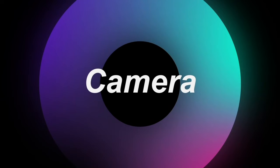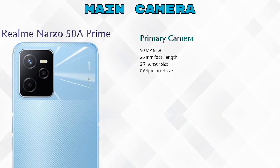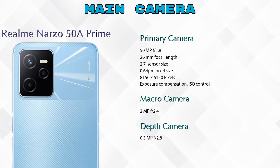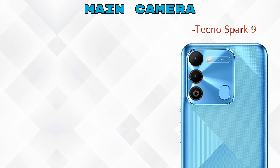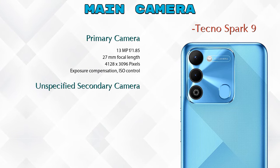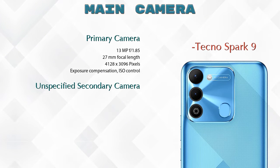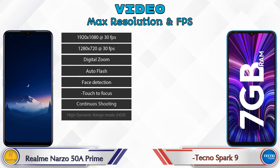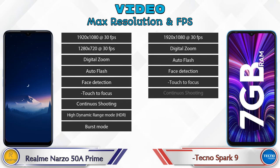Now let's talk about our favorite feature — camera. For the rear camera, the 50A Prime has three cameras: a primary camera, macro camera, and depth camera. The Spark 9 has two cameras: a primary camera and an unspecified secondary camera. For video, the 50A Prime has 9 different types of features available and the Spark 9 has 7.